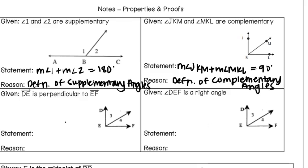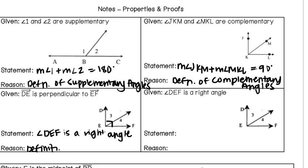In the next example, ray DE is perpendicular to ray EF. When things are perpendicular, we know that they create a right angle. So the statement we can make is that angle DEF is a right angle. We know this because we're using the definition of what it means to be perpendicular — since it's given that those are perpendicular, we use that definition to make our claim.